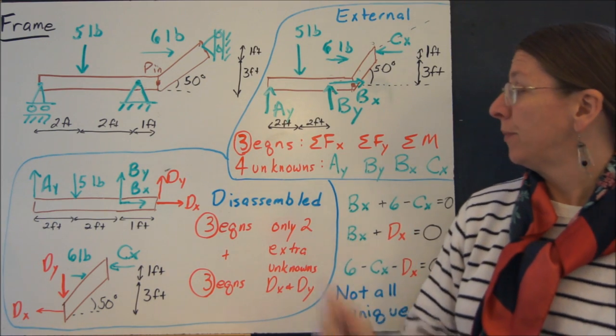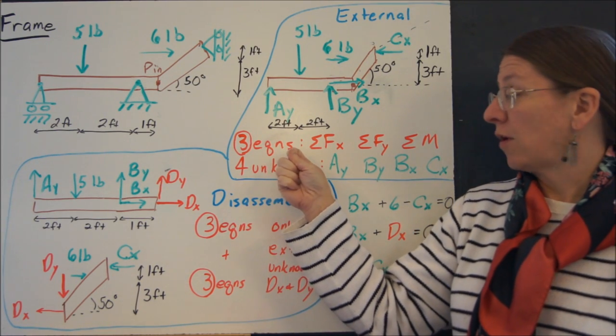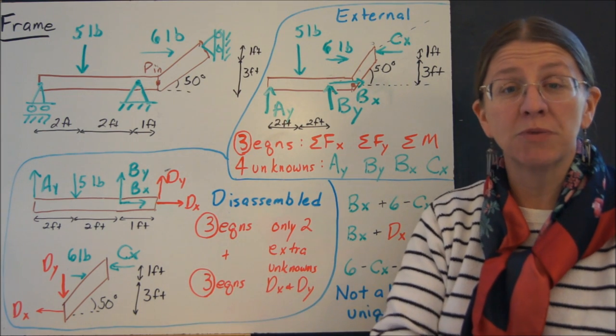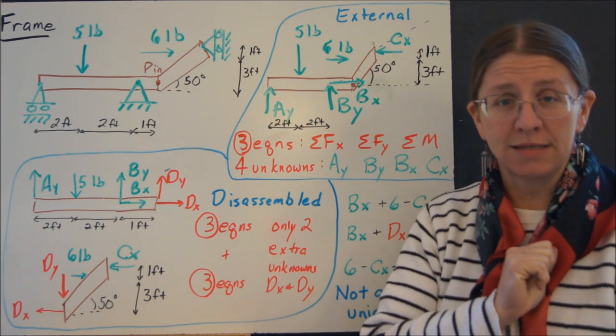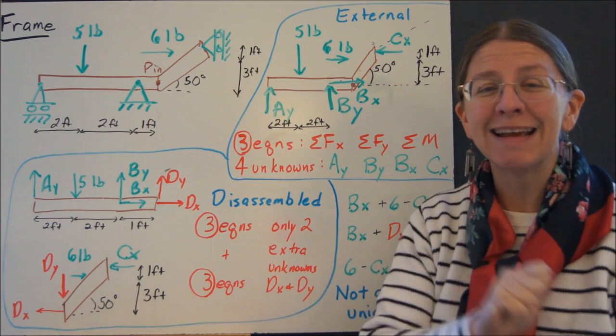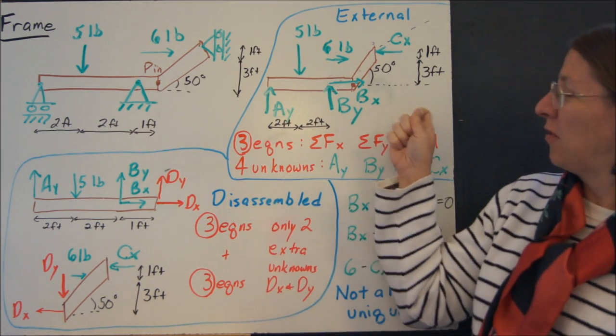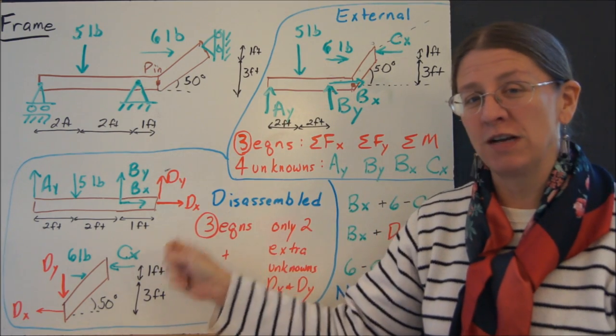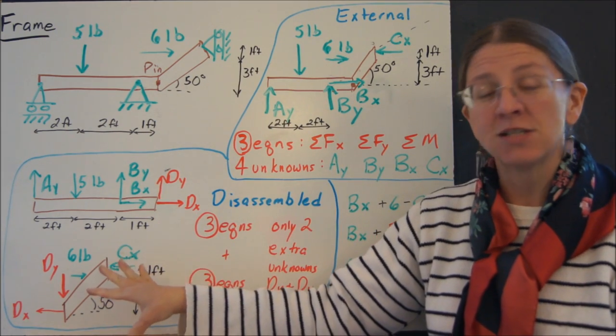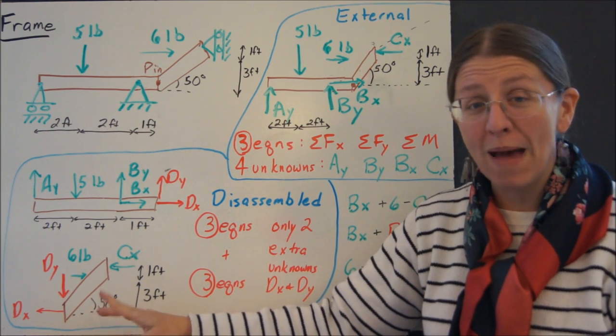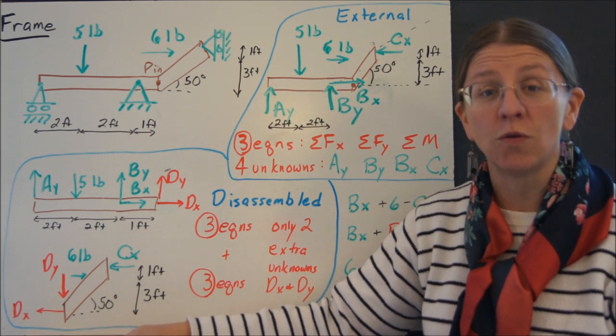One other thing I want to point out here: it's tempting to say that there are three equations here, three equations here, and three equations there. Three plus three plus three is nine. There are only six linearly independent equations here. These three are not different from these six. So when you take this apart with two free body diagrams, the maximum number of unknowns you can solve for is six.